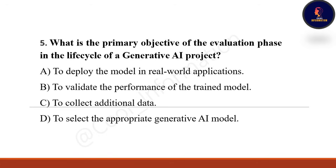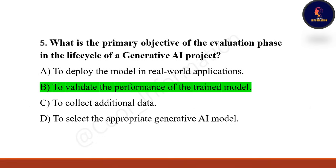Next question: What is the primary objective of the evaluation phase in the life cycle of a generative AI project? Option A: to deploy the model in real-world applications. Option B: to validate the performance of the trained model. Option C: to collect additional data. Option D: to select the appropriate generative AI model. Correct option is B — to validate the performance of the trained model.